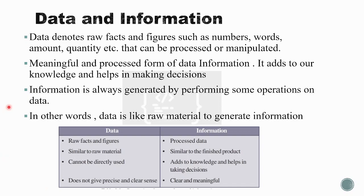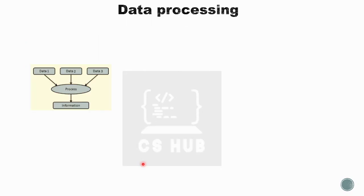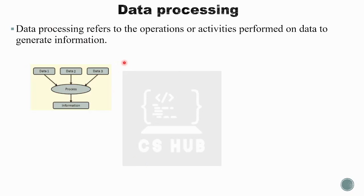One material is raw materials; raw materials will be processed into a final product. Similarly, data is the raw material and information is the finished product. That is the difference between data and information. Data processing refers to the operations or activities performed on data to generate information.